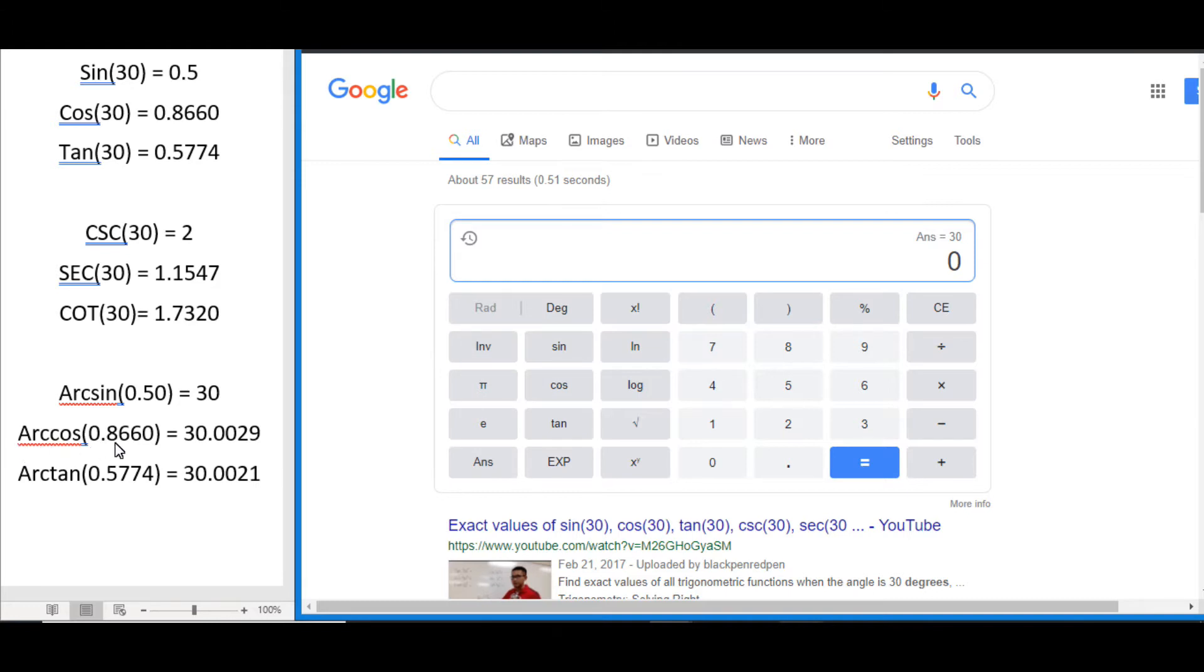Arc cos, remember we got 0.8660 for the cosine of 30. So inverse arc cos 0.8660 equals and you can see we get 30.0029 which would round to about 30 if we had more decimals there. So that makes sense.